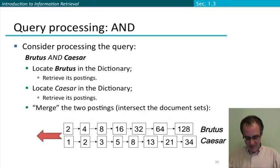But now, let's go to that fraction more complicated case. We're going to locate both Brutus and Caesar in the dictionary, look up their postings lists, and what we'd like to do is work out what are the documents that contain both Brutus and Caesar.